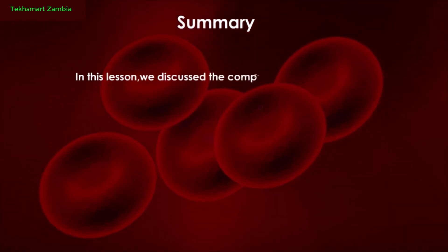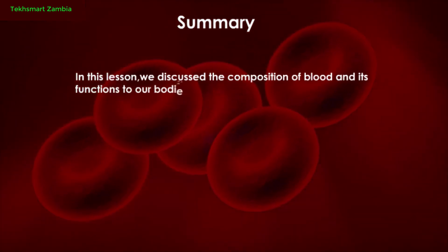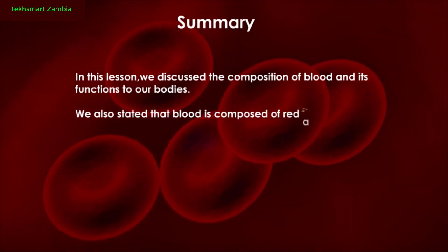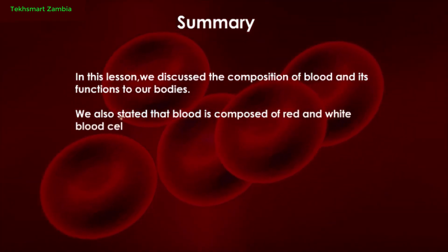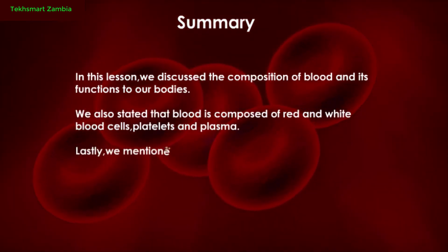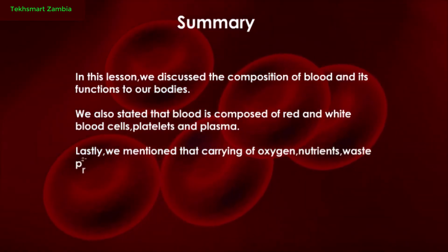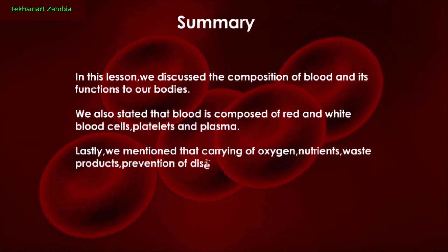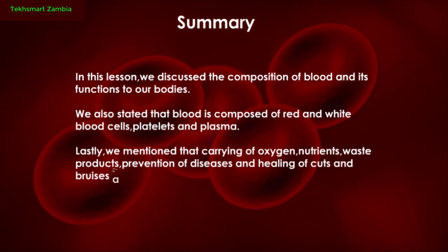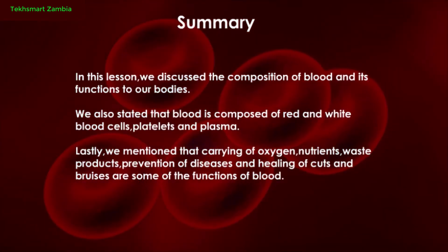Summary: in this lesson we discussed the composition of blood and its functions to our bodies. We stated that blood is composed of red and white blood cells, platelets, and plasma. Lastly, we mentioned that carrying of oxygen, nutrients, waste products, prevention of diseases, and healing of cuts and bruises are some of the functions of blood.